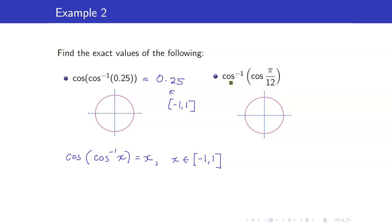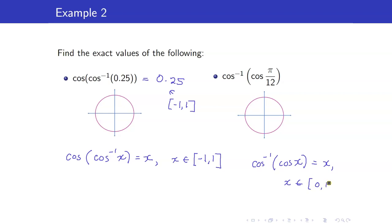For cosine inverse of cosine of pi over 12: the outermost function is cosine inverse, so we can cancel if this quantity is in the range of cosine inverse, which is 0 to pi. Pi over 12 is an element of 0 to pi, so this is just pi over 12.